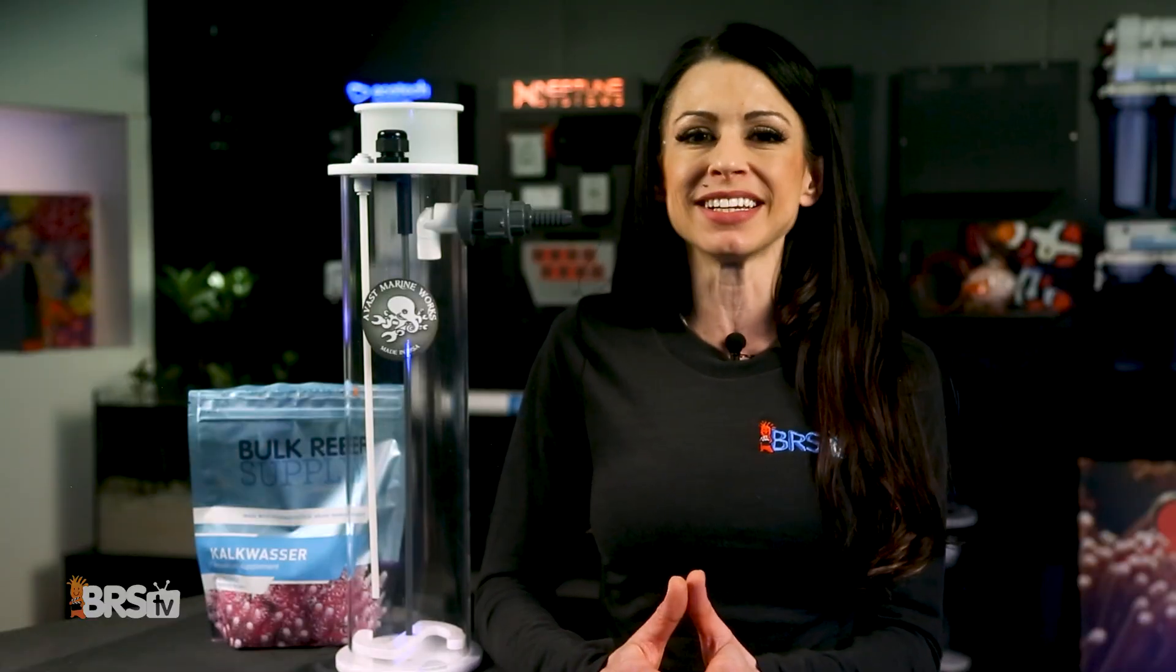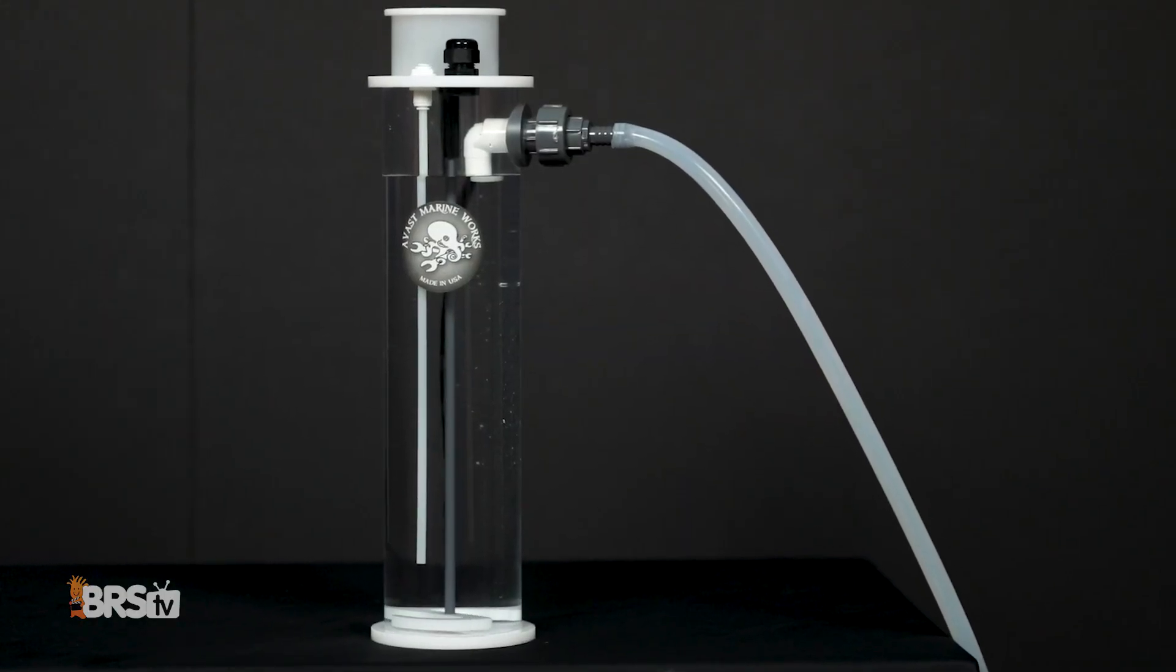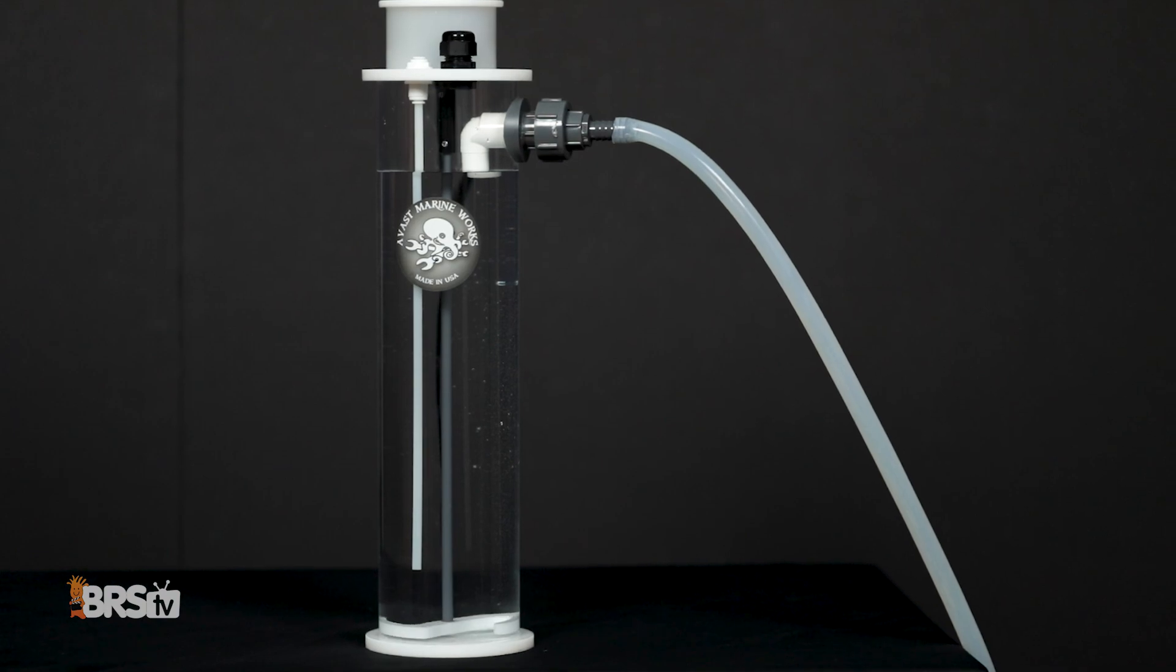Plus I've got some recommendations on how much calc to start with and a quick and easy setup tip. So let's start by answering the question, why would I want to use a calc stirrer over the traditional ATO approach?